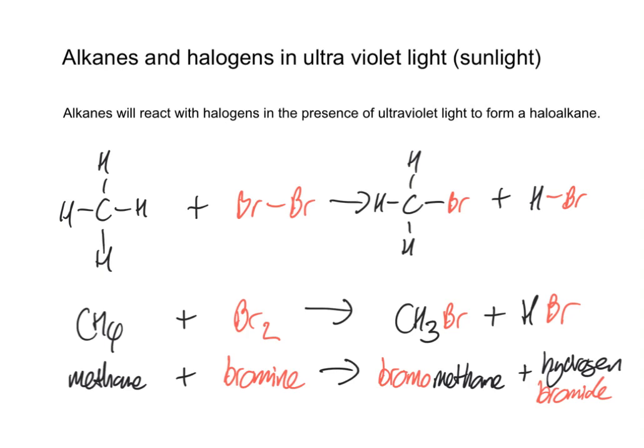Now this is really important because the name now changes with the bromo in front, bromomethane, indicating that one bromine is substituted to the methane. If this was reacting with chlorine, it would be chloromethane or iodomethane, things like that. And if it was ethane reacting with bromine, it would then become bromoethane.